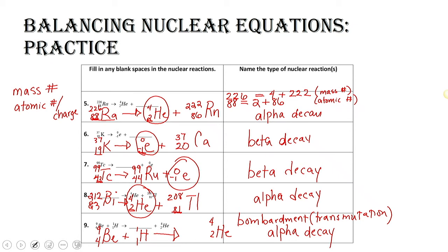Let's figure out what our daughter nuclide is after this reaction. We've got 9 and 1 for our mass numbers, giving us 10 on the product side. We have a 4 here for the alpha particle, so 4 plus what gives us 10? It's 6. For atomic numbers, beryllium gives 4 and hydrogen gives 1, totaling 5 on our reactant side. Helium has 2, so 2 plus what gives us 5? That's 3. Looking on the periodic table, we get lithium — lithium-6 as our daughter nuclide.